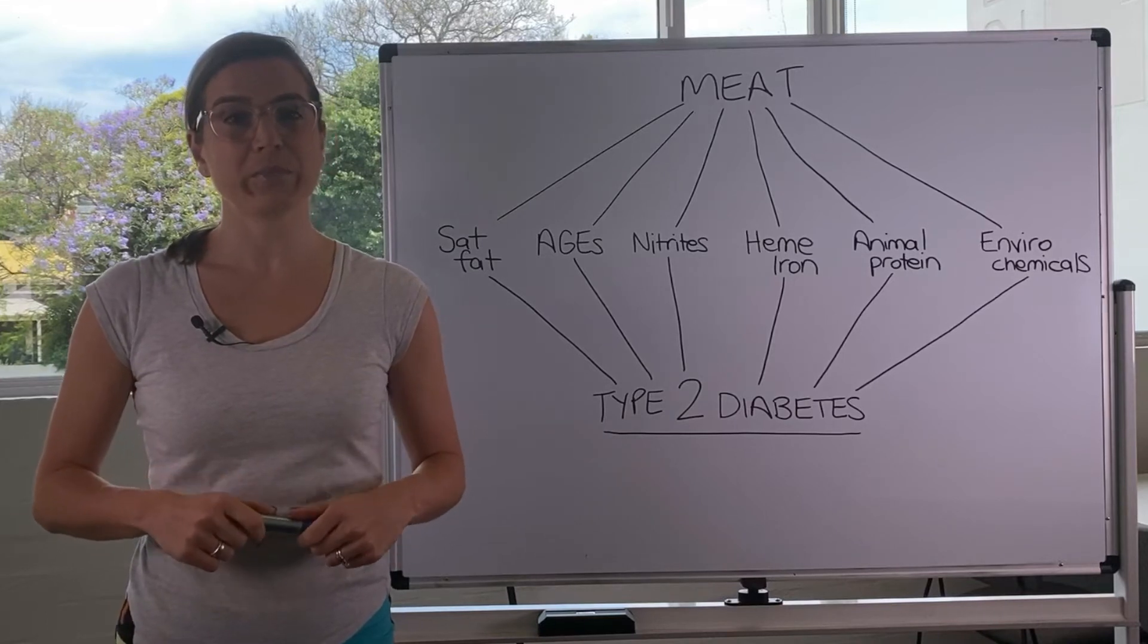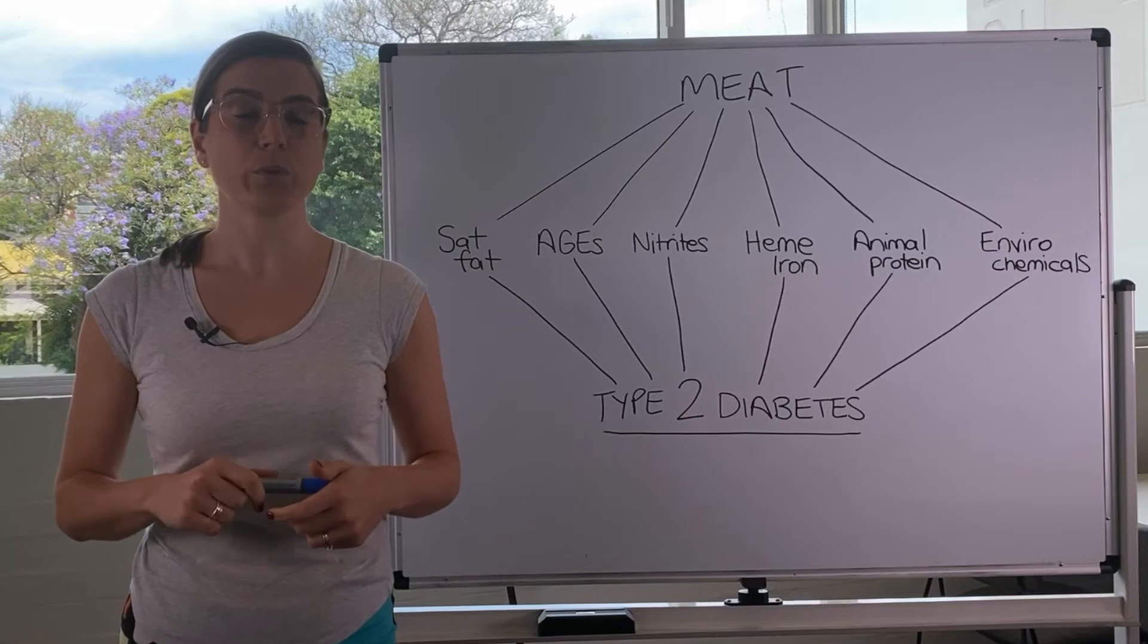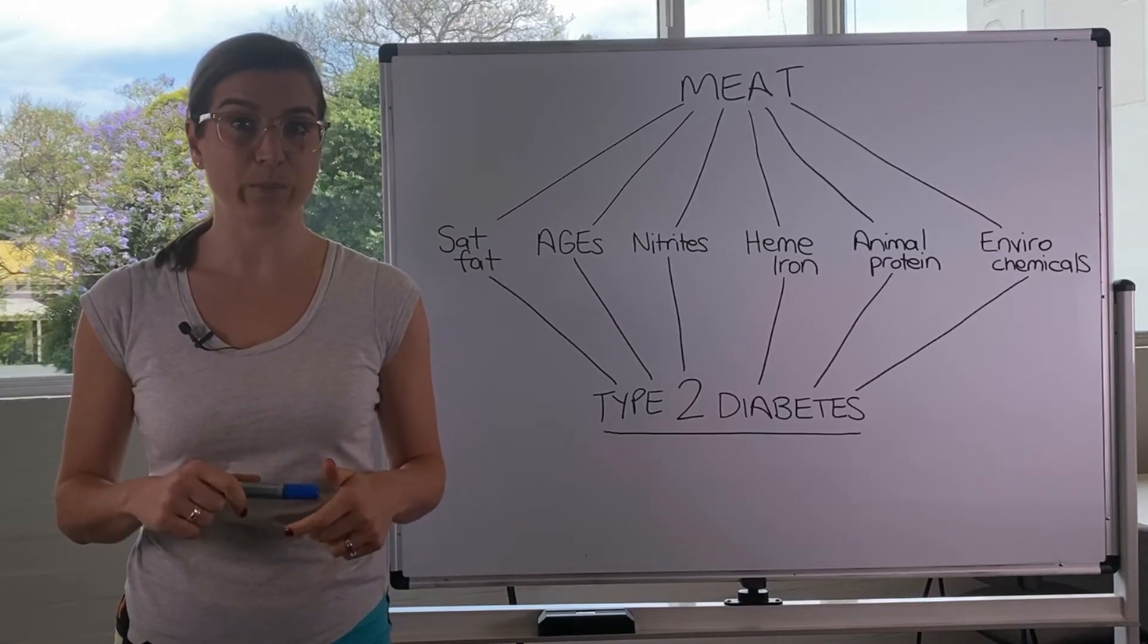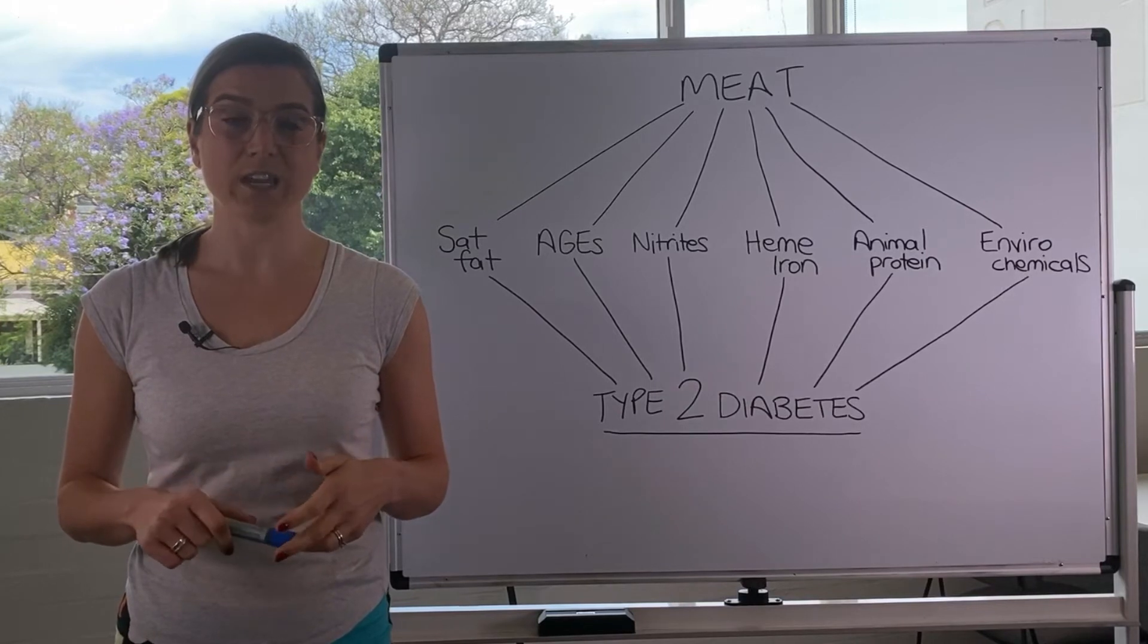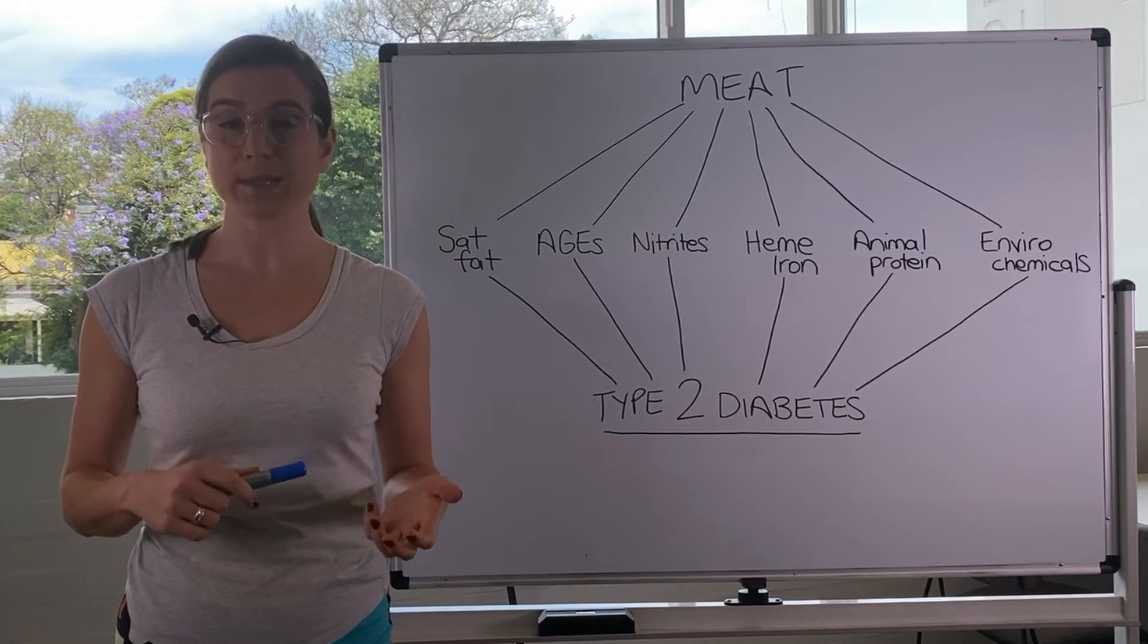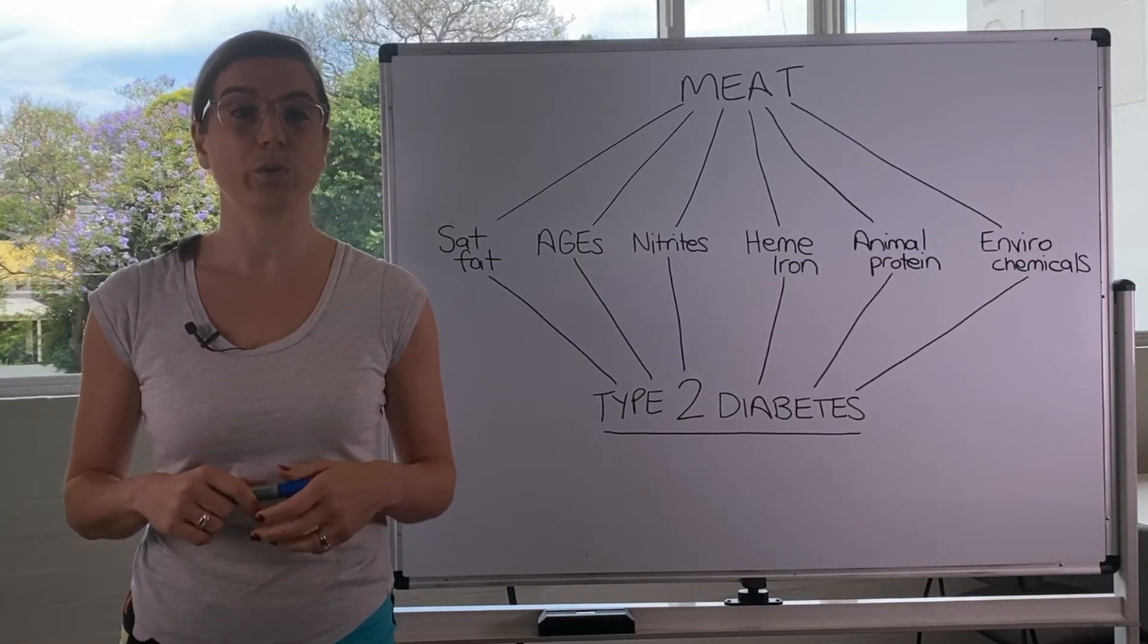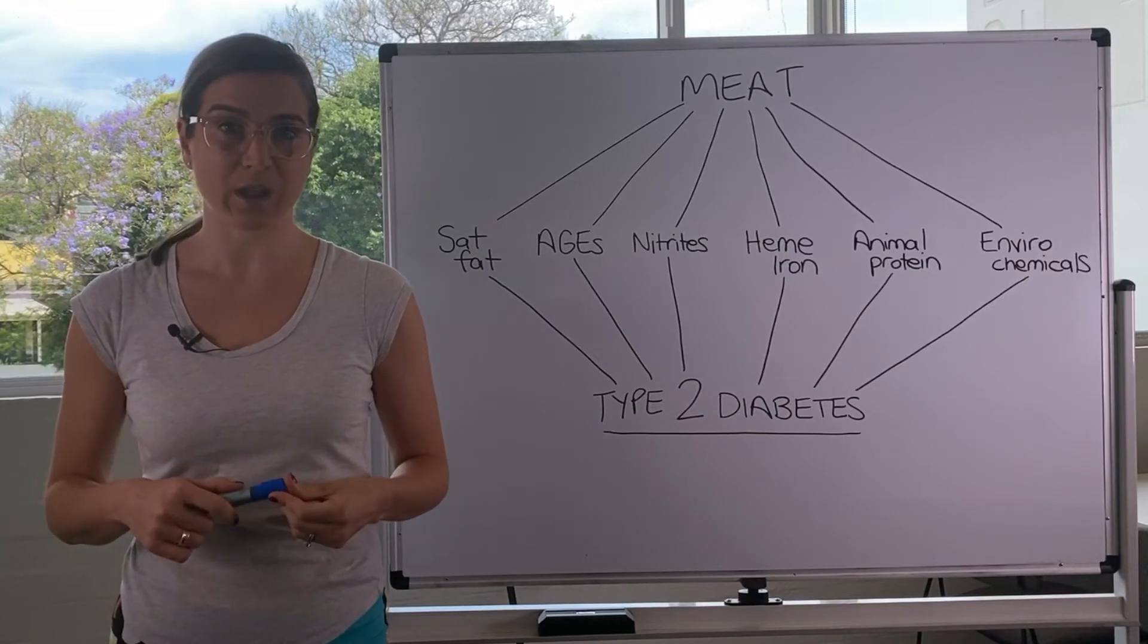A number of major long-term studies have shown that people who have the highest intake of meat products, so that is meat, fish, eggs and dairy, have the highest risk of type 2 diabetes, while those with the lowest intake of meat products or those who don't eat meat products have the lowest risk of type 2 diabetes.